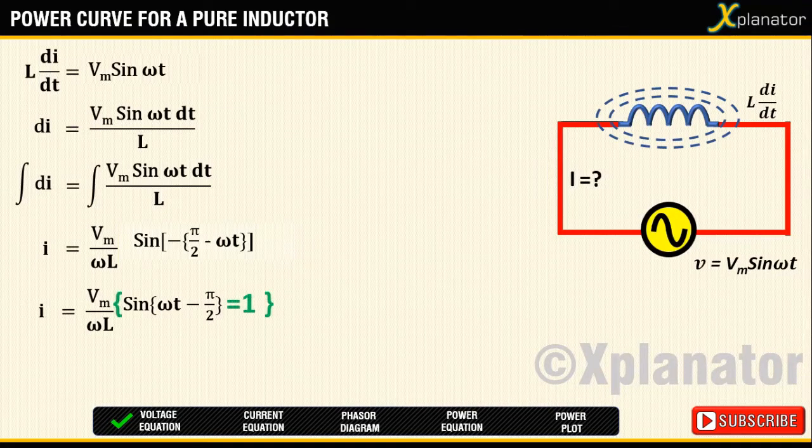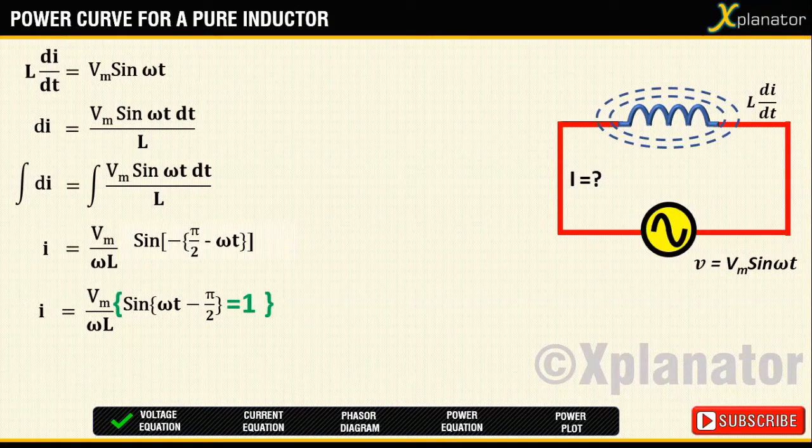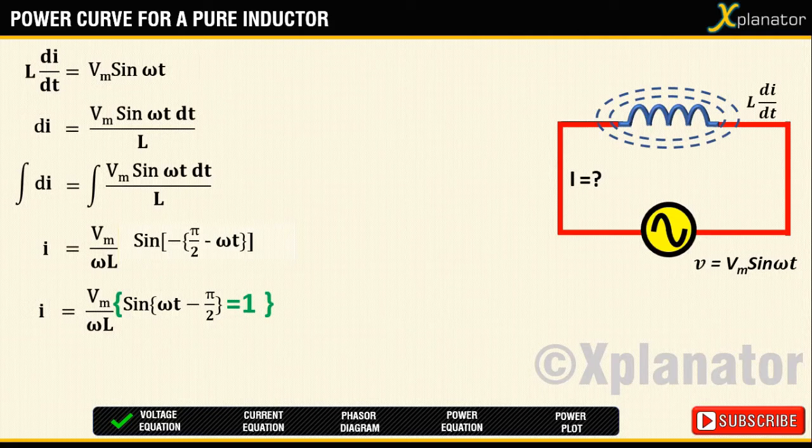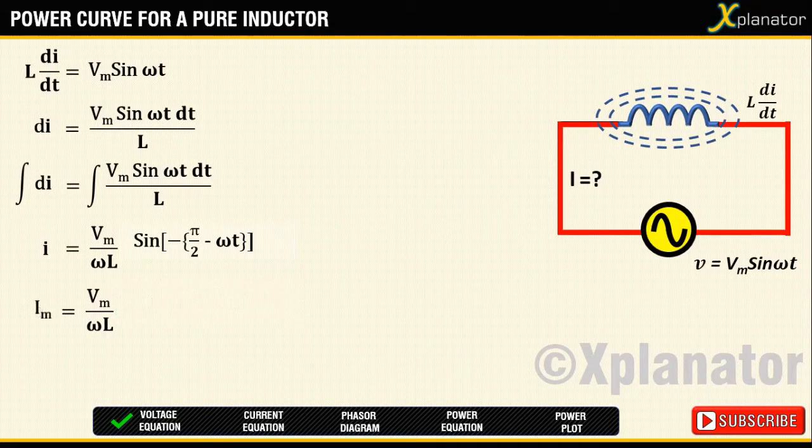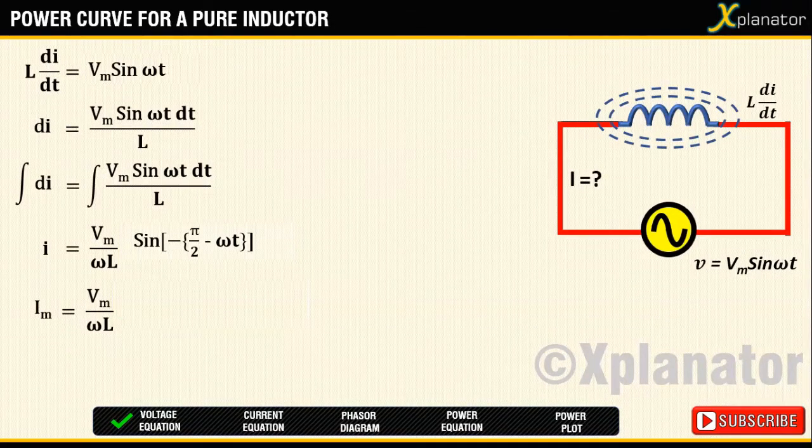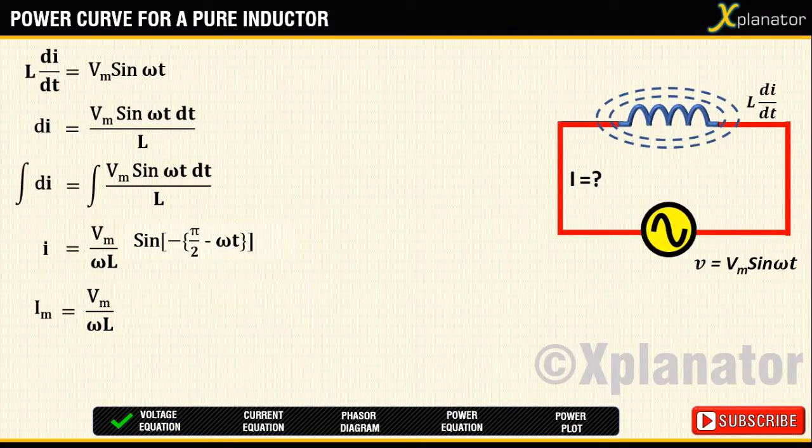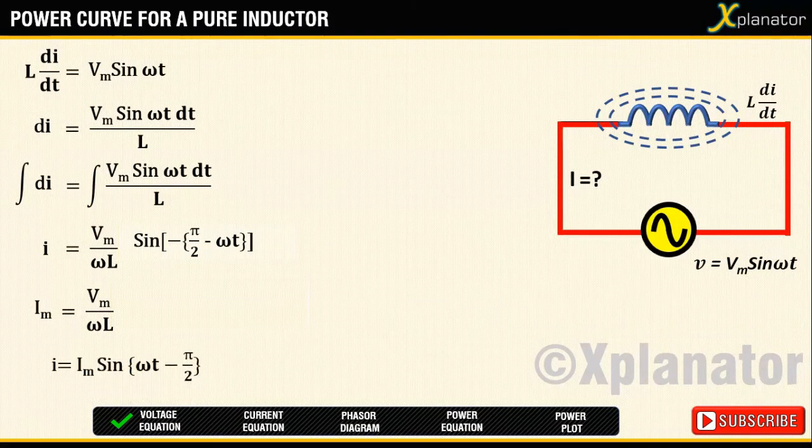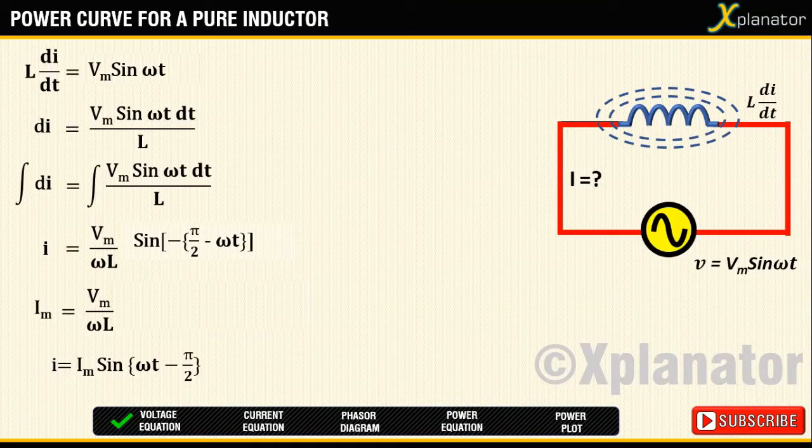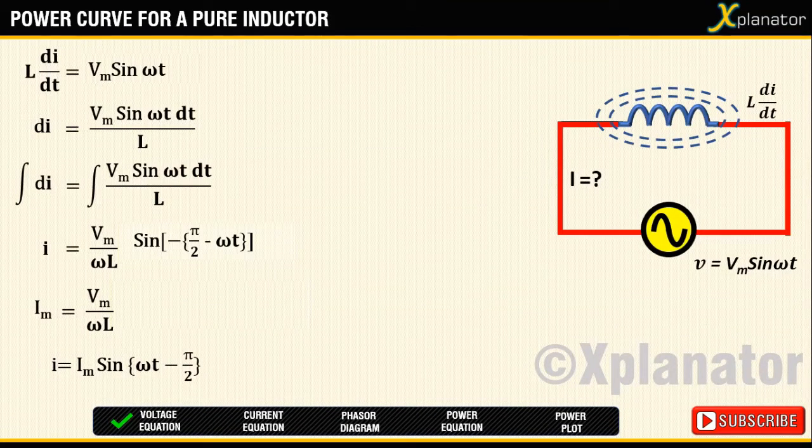When sin reaches its maximum value, current will also reach its maximum value. Therefore, Vm by ωL can be denoted as Im. Using this value of Im, equation for current can be written as I equals Im into sin of ωt minus π by 2.